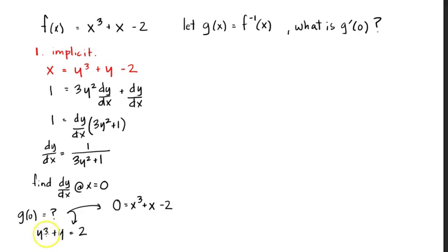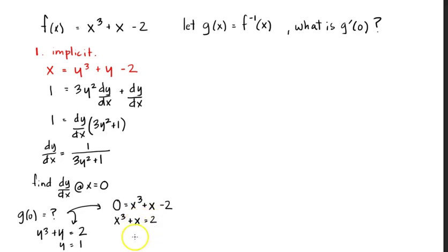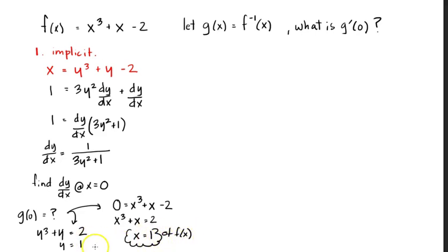In this case, what cube plus itself equals 2? There's not too many choices here. I know that y is going to have to be equal to 1. And as you look at this, x cubed plus x equals 2, so therefore x is going to have to be equal to 1. Now remember, this is the 1 of f of x, and this is the y — which means the x of f of x is the y of g of x. That's how it's working here.